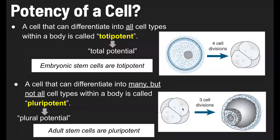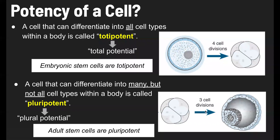But beyond that point, for the next several divisions, you're going to produce pluripotent cells. These are cells that can differentiate into many, but not all, cell types within the body. This would include adult stem cells — adult stem cells are considered pluripotent.